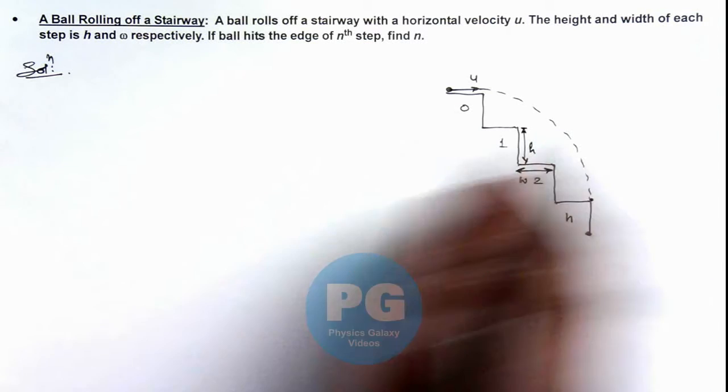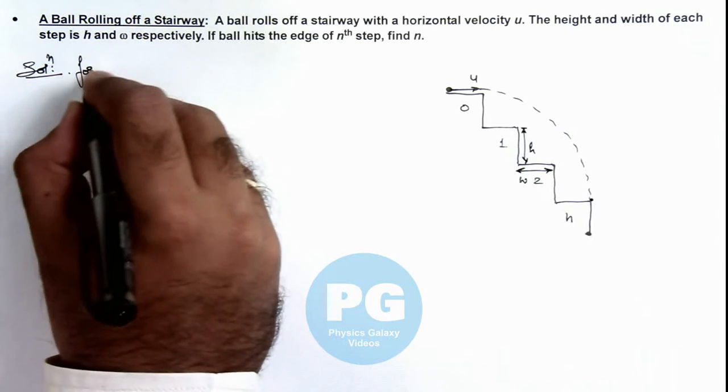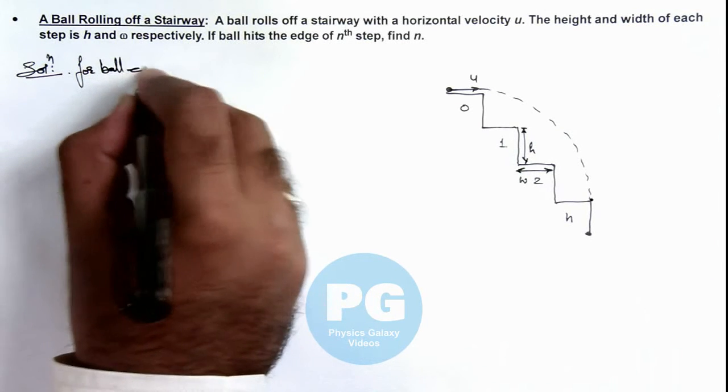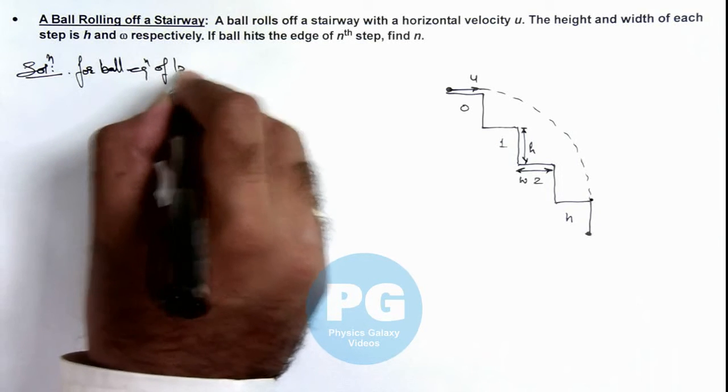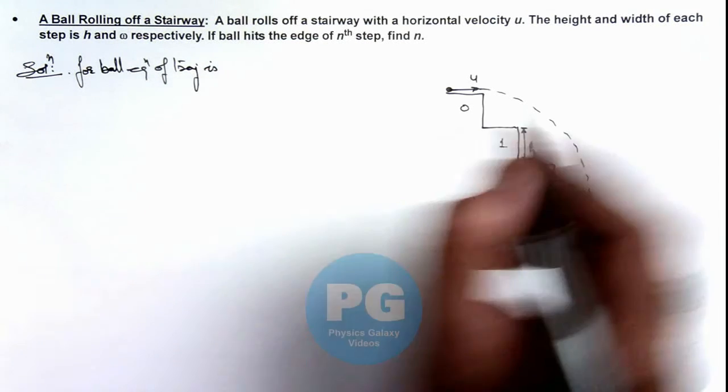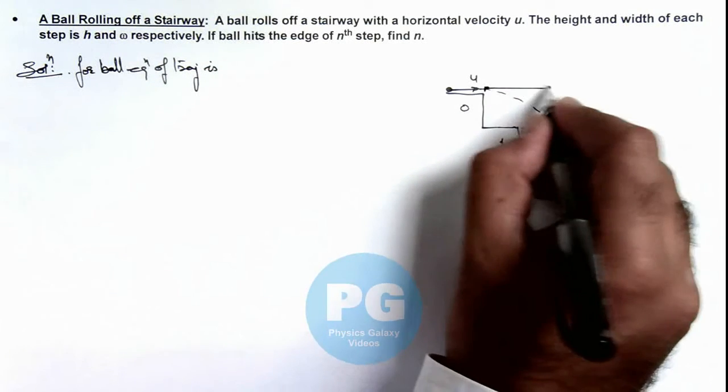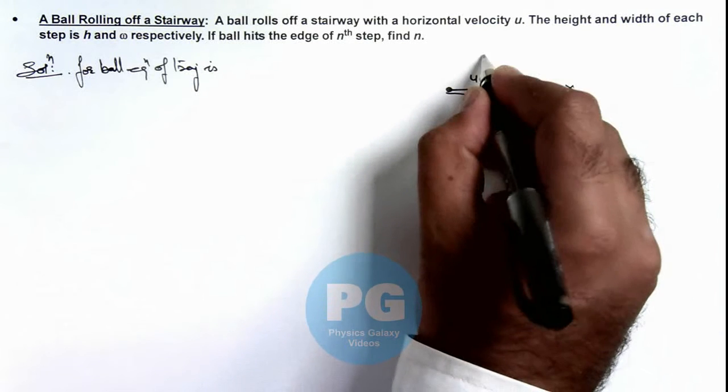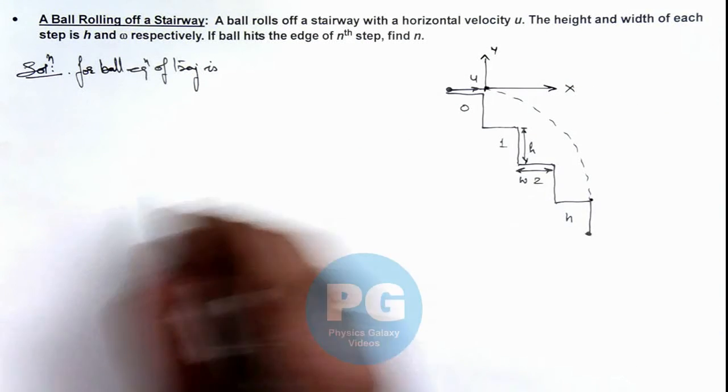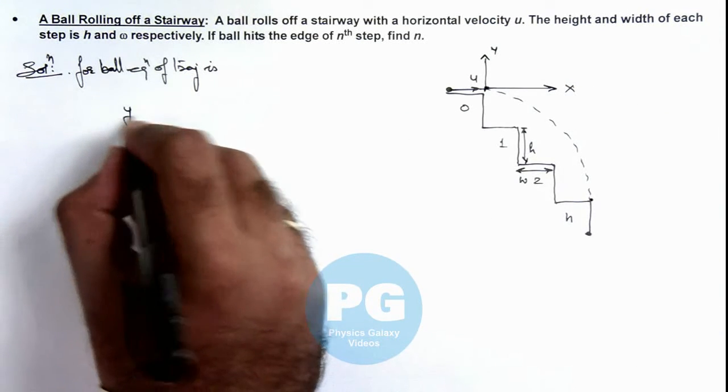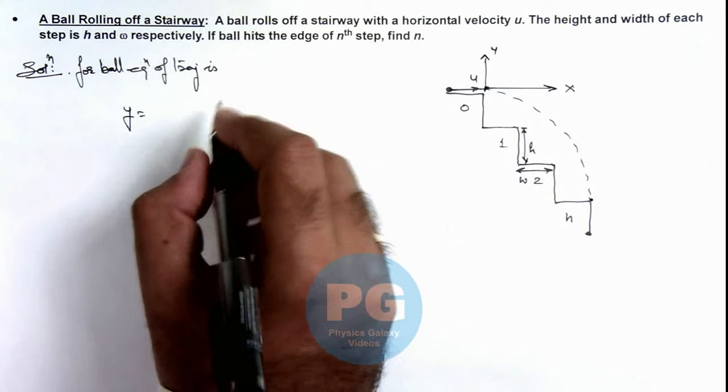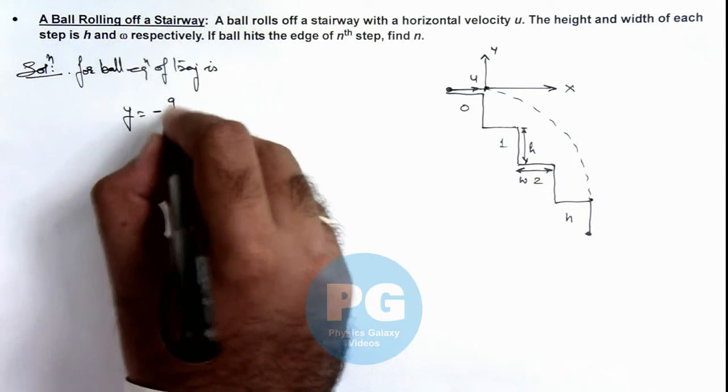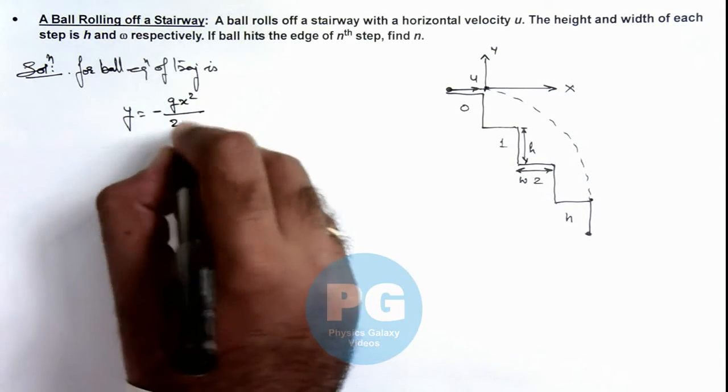In this situation, we can write for the ball the equation of trajectory. Here we can consider the initial point as origin, this as x direction, this as y direction. The trajectory for a horizontally thrown projectile is given as y = -gx²/2u².